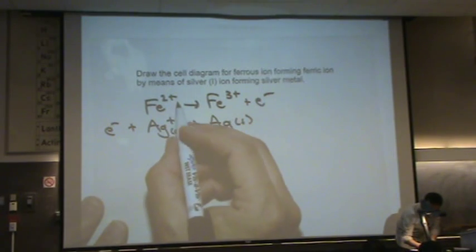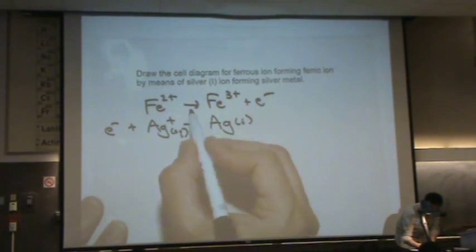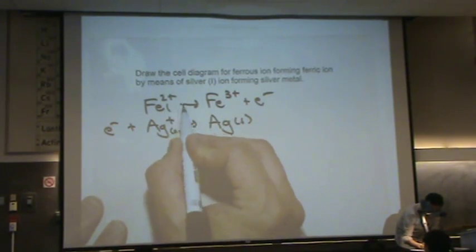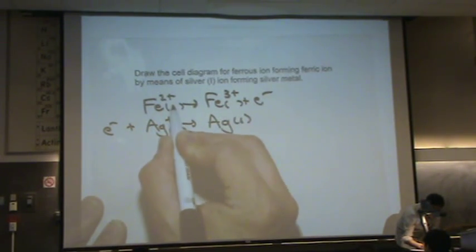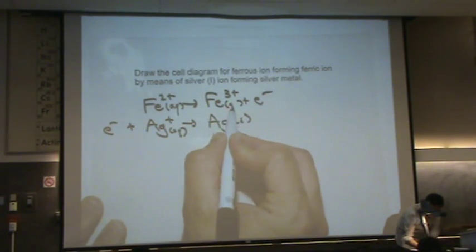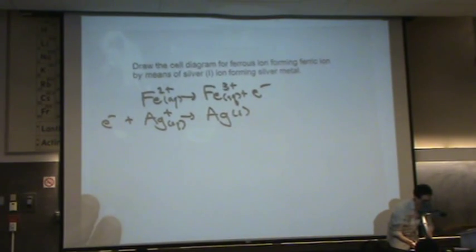What's the state on ferrous and ferric? Yeah, if it's charged, it's aqueous. So all charged things will be aqueous for you.